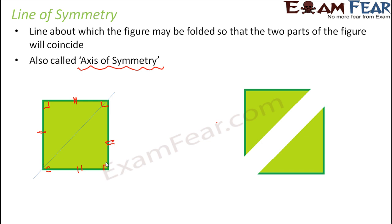So in all, there are four lines of symmetry for a square. That does not mean every object will have four or five lines of symmetry — it totally depends on the shape, size, and dimensions of that particular object. But whenever an object has line symmetry, there must be at least one line of symmetry.